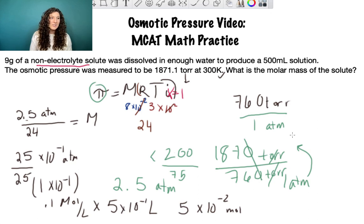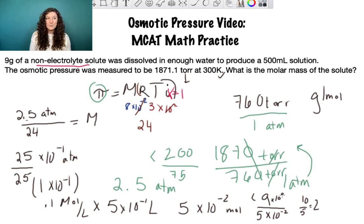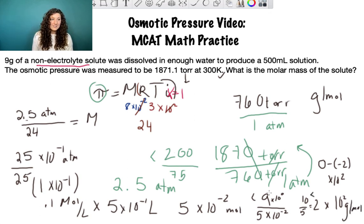Our molar mass is always going to be in grams per mole. So we just need to divide grams, which is 9 grams, divided by our mole value. So we have 9 divided by 5 times 10^-2. We'll round slightly up which means our value will be a little less. So that's 10 divided by 5 equals 2, and 10^0 divided by 10^-2, we subtract 0 minus minus 2, which is 10^2. So our final answer is 2 times 10^2 grams per mole. Our answer is going to be a little less than 200 grams per mole.